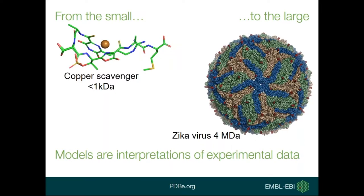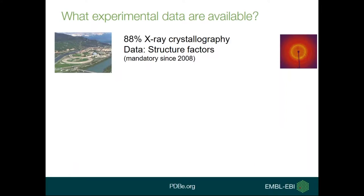All molecules in the PDB are interpretations of experimental data, ranging from a very small molecule — a copper scavenger less than a kilodalton in size — to really large molecules like the Zika virus deposited in the PDB at 4 megadaltons. Because they're experimentally determined structures, it's important to understand what experimental data are available.